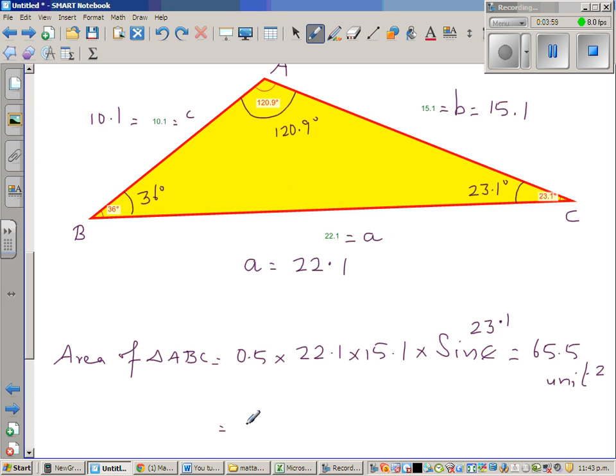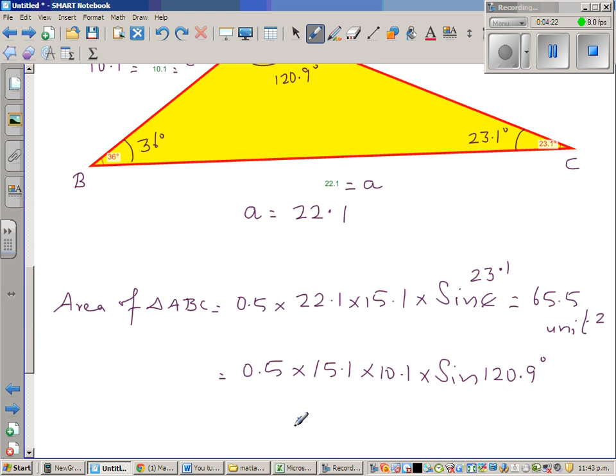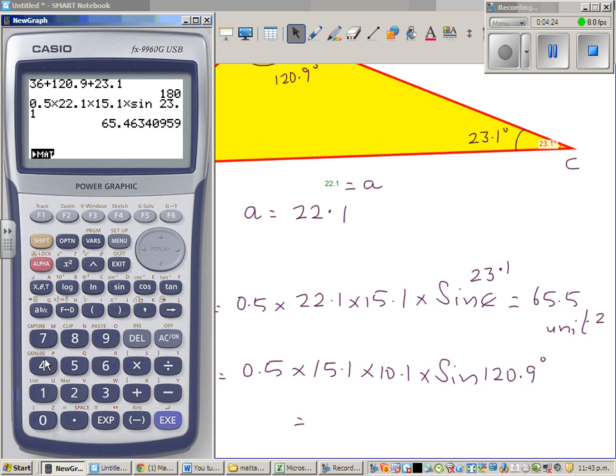It will be 0.5 times B, which is 15.1 times C, which is 10.1, times sign of the angle formed of the angle between them. The angle formed between them is 120.9 degrees. Hopefully, the answer should be almost the same.